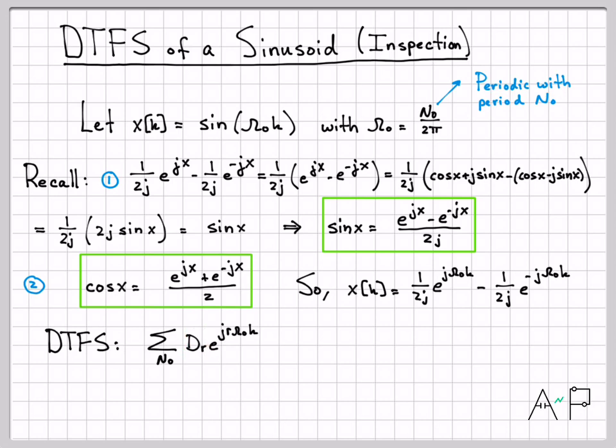Remember what our DTFS representation was, it was a sum over n naught terms of numbers times e to the jr omega naught k. Well, look at this, I have e to the j omega naught k is right there. So if I just kind of compare this to this, it looks like this must be an r equal 1 because I don't have any value there. Similarly, this right here, e to the j omega naught k times a negative 1 must mean r is negative 1 in that representation.